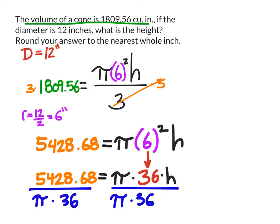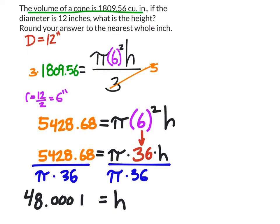For my calculator, I can punch that in at the same time. Some older calculators may require dividing by pi first and then by 36, which will give you the height. In my calculator, it gave me this decimal. But that's all we need because at the very top, it told us to round to the nearest whole inch. So I'm going to round this to 48 inches.